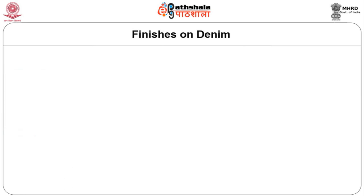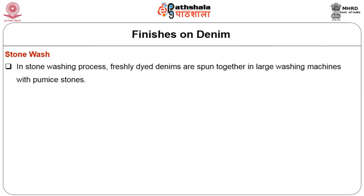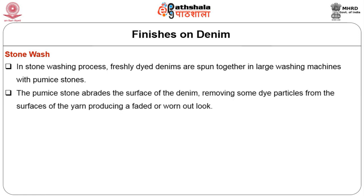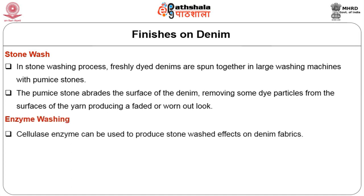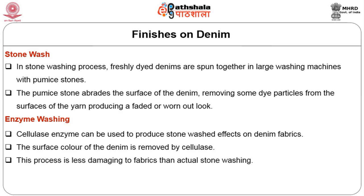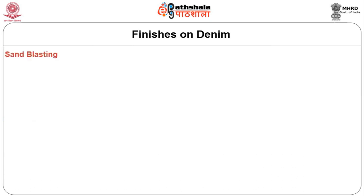Denim, a fabric we all love, has some special finishes. Stone wash: freshly dyed denims are spun together in a large washing machine with pumice stones. The pumice stones abrade the surface of the denim, removing some dye particles from the surface of the yarn, producing a faded or worn-out look. Enzyme washing: cellulase enzyme can be used to produce a stone wash effect on denim. The surface color is removed by cellulase instead of pumice stones. This process is less damaging to fabrics than actual stone washing and gives a very soft feel.